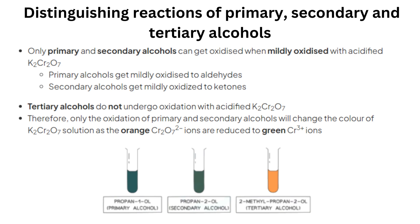Distinguishing reactions of primary, secondary, and tertiary alcohols. Only primary and secondary alcohols can get oxidized when mildly oxidized with acidified potassium dichromate. Primary alcohols get mildly oxidized to aldehydes. Secondary alcohols get mildly oxidized to ketones. Tertiary alcohols do not undergo oxidation with acidified K2Cr2O7. Therefore, only the oxidation of primary and secondary alcohols will change the colour of K2Cr2O7 solution, as the orange Cr2O7²⁻ ions are reduced to green Cr³⁺ ions.